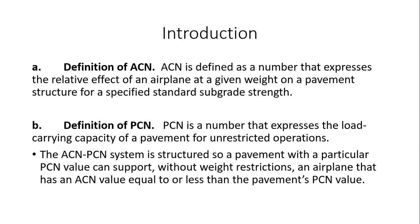ACN expresses the relative effect of an airplane at a given weight on a pavement structure for a specified standard subgrade strength. PCN is defined as the load-carrying capacity of a pavement to allow unrestricted operations — for a mix of aircraft or a particular aircraft. If the ACN value is equal to or less than the PCN value, the airplane will be allowed to use the facility.